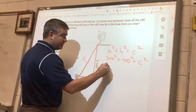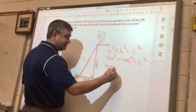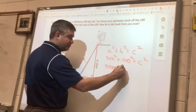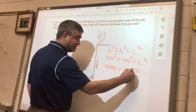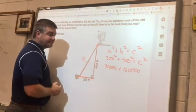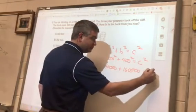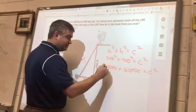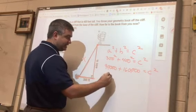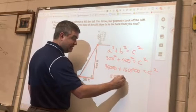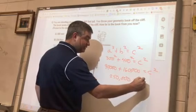Okay, 300 squared is 90,000. 400 squared would be 160,000. And this is still equal to c squared. If I add these two, 90,000 and 160,000, I think I get 250,000 is equal to c squared.